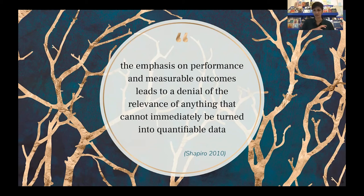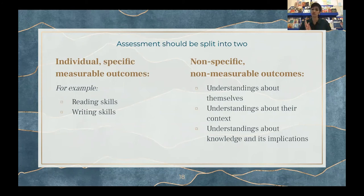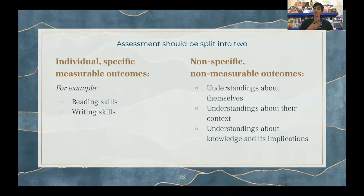Assessment should be split into two. We can measure individual specific measurable outcomes — for example reading skills and writing skills — understand those against benchmarks. But we should also privilege non-specific and non-measurable outcomes. We should allow space for students and teachers to stop and think: what have you learned about yourself? What have you learned about the world around you? And what have you learned about the potential impact of the knowledge that you now have?